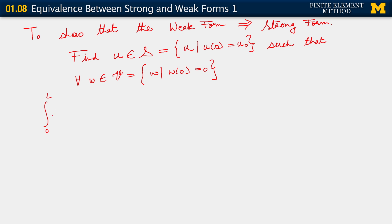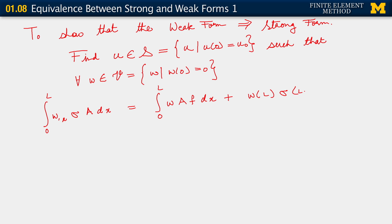Integral from 0 to L of w,x times sigma times A dx equals integral from 0 to L of w times A times f dx, plus w at L times sigma at L times A. That is our weak form.